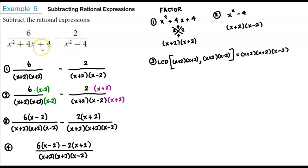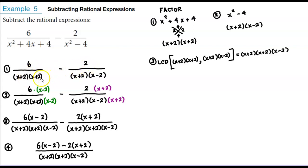The first thing we want to do in order to subtract these rational expressions is find the common denominator. To do that, we need to factor first. The denominators need to be factored before we can figure out the least common denominator. So we factor the first denominator, x squared plus 4x plus 4, and we get x plus 2 times x plus 2.